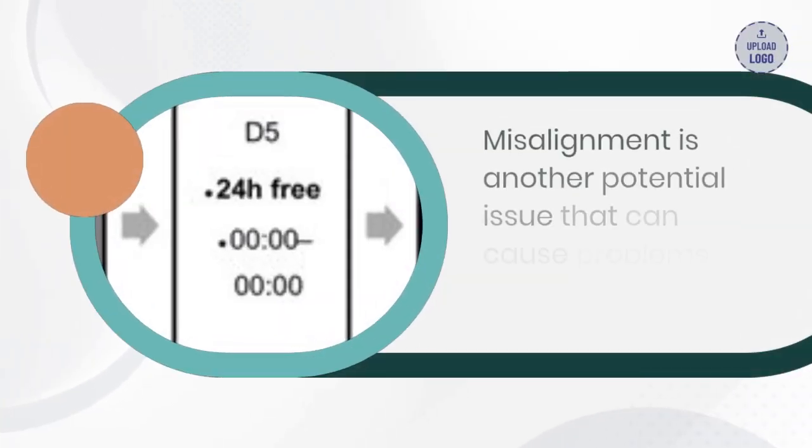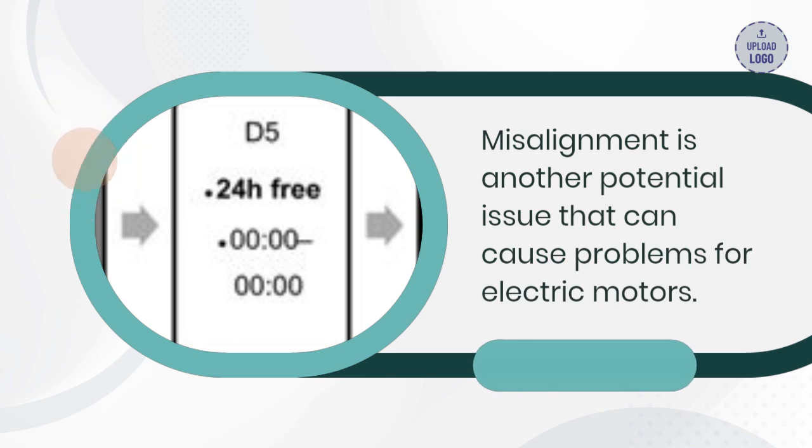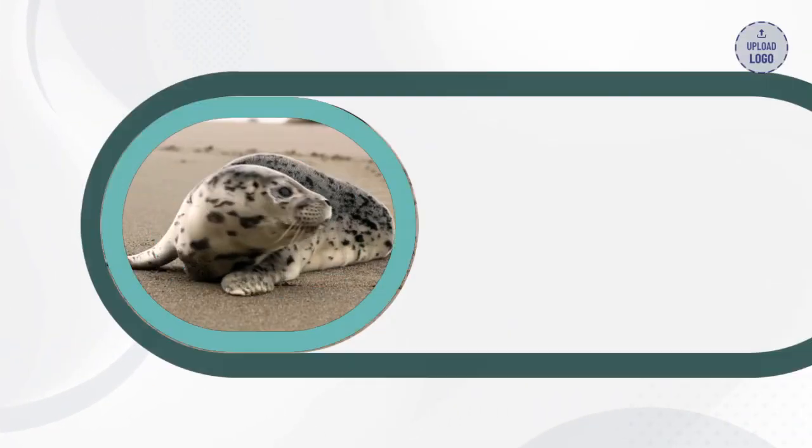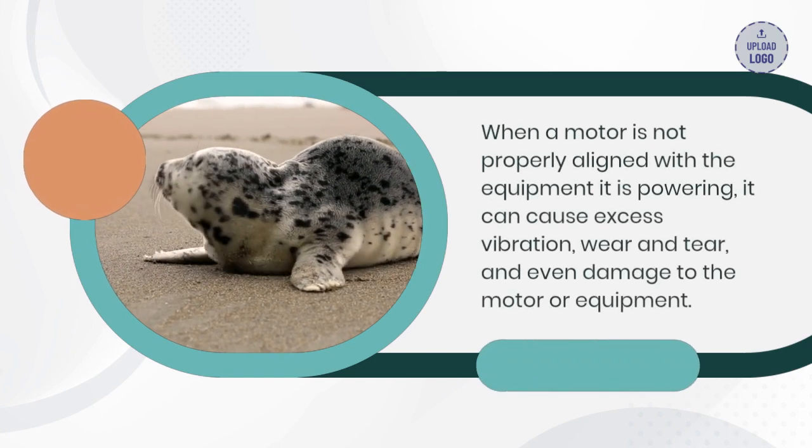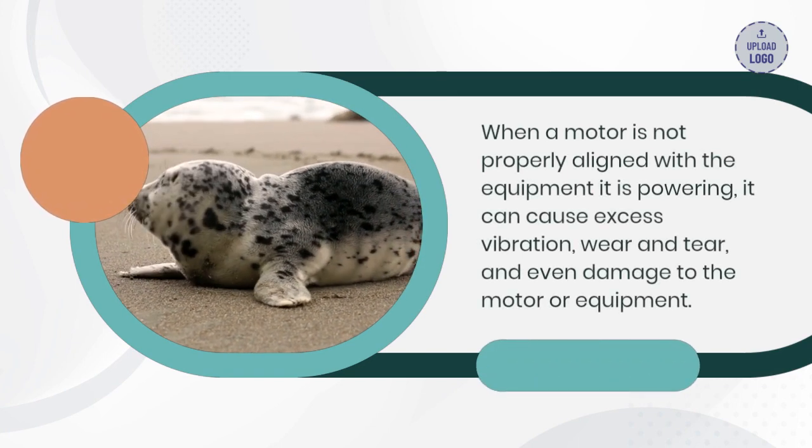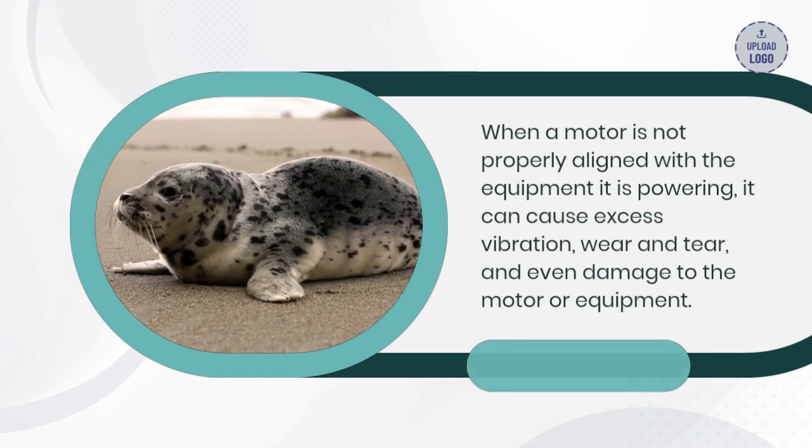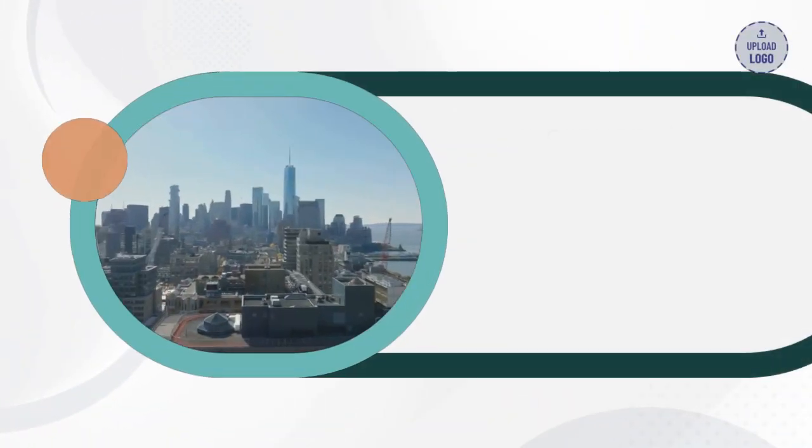Misalignment is another potential issue that can cause problems for electric motors. When a motor is not properly aligned with the equipment it is powering, it can cause excess vibration, wear and tear, and even damage to the motor or equipment. To prevent this, ensure that the motor and equipment are properly aligned.